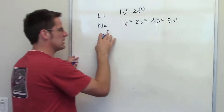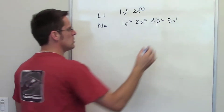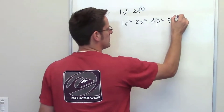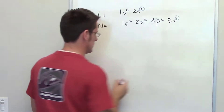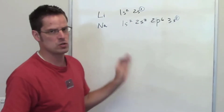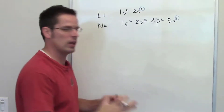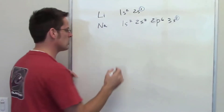By comparison, the first electron being removed from sodium is in the 3s orbital. All s-orbitals — 1s, 2s, 3s — have the same shape: they're all spheres.